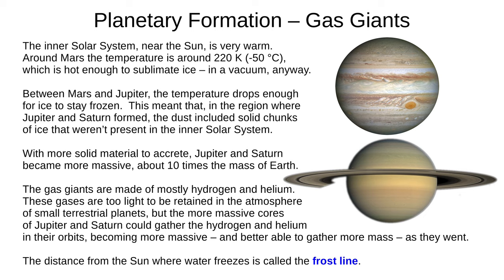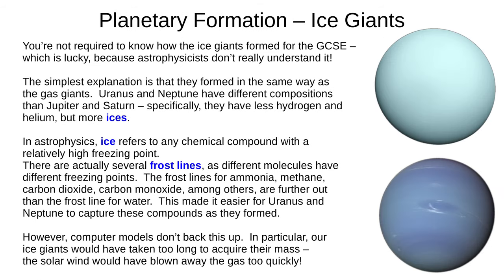The distance from the Sun where water freezes is called the frost line. Lastly, the ice giants. You don't need to know how the ice giants formed for the GCSE, and even astrophysicists don't really understand it. The simplest explanation is that they formed similarly to the gas giants, but Uranus and Neptune have more ices than Jupiter and Saturn, and less hydrogen and helium. In astrophysics, ice refers to any chemical compound with a relatively high freezing point. There are actually several frost lines, since different molecules have different freezing points — the frost lines for molecules such as ammonia, methane, and carbon dioxide and monoxide are further out than the frost line for water. This made it easier for Uranus and Neptune to capture these compounds as they formed. However, computer models don't support this — our ice giants would have taken too long to gather their ices, and by the time they did, the hydrogen and helium that they have would have been blown away by the solar wind.